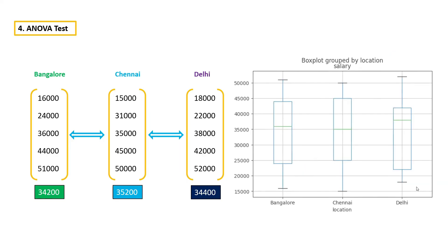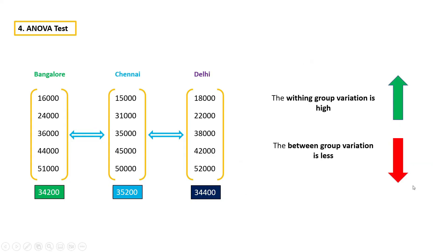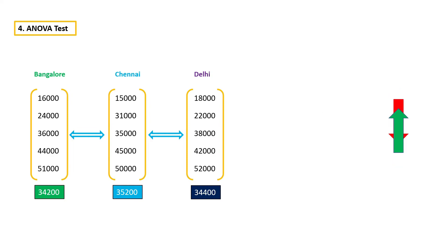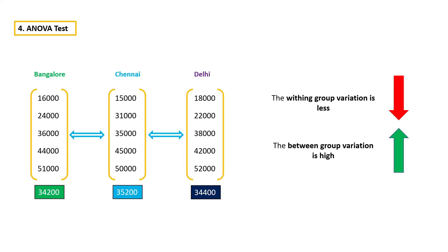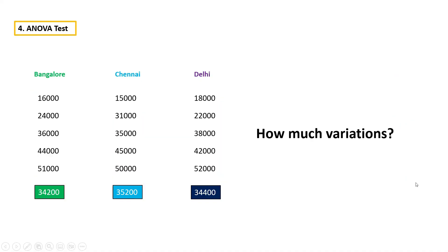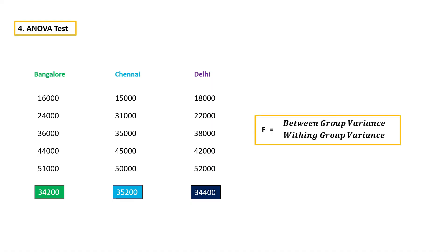If you plot a box plot, it will make it even clearer. As you can see, there is not much difference between locations, which indicates that location does not make any change in salary. This is what ANOVA also tells us. As I mentioned earlier: if the within-group variation is high and the between-group variation is less, then that feature is not important. Whereas if the within-group variation is less and the between-group variation is high, then that feature is important. But how much variation must be there to make this decision? That is where ANOVA comes into the picture.